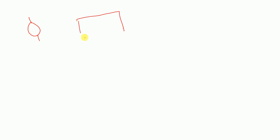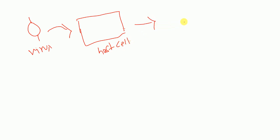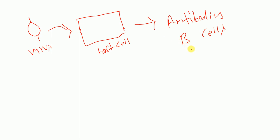Whenever there is infection — let's say there is a virus — whenever there is infection by this virus, or a bacteria, or any other pathogenic microorganism, what happens is that our immune cells, that is B cells, they produce antibodies. So antibodies are produced by B cells. When the virus is infecting the host cell, our immune system, especially B cells, produces antibodies, and these antibodies can be neutralizing antibody or non-neutralizing antibody.